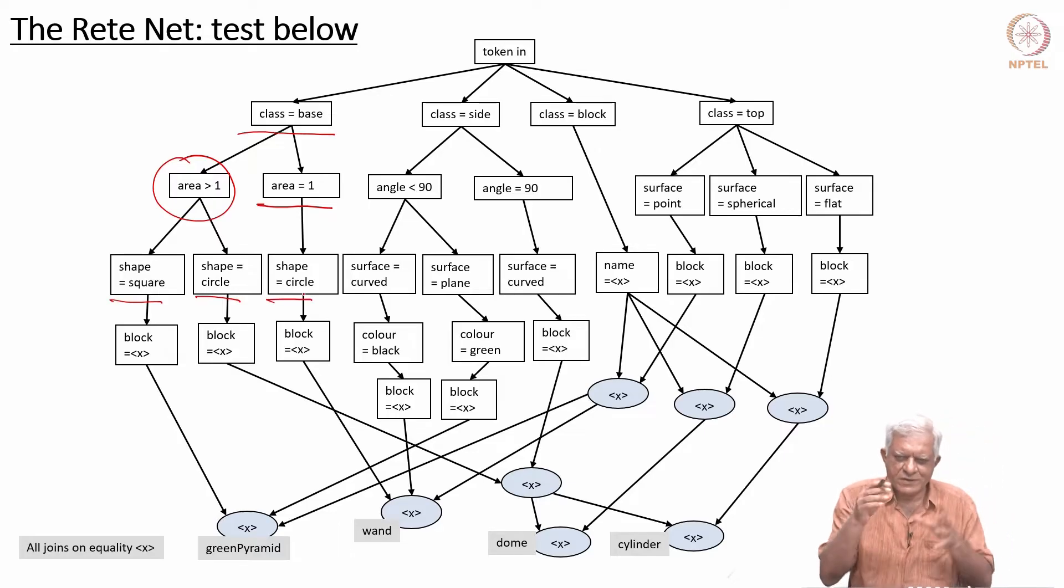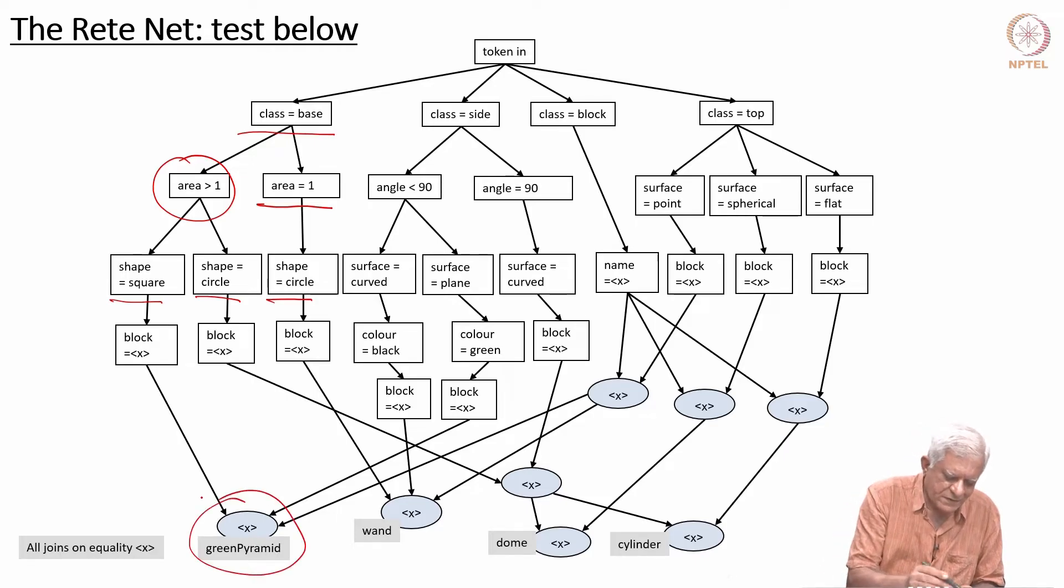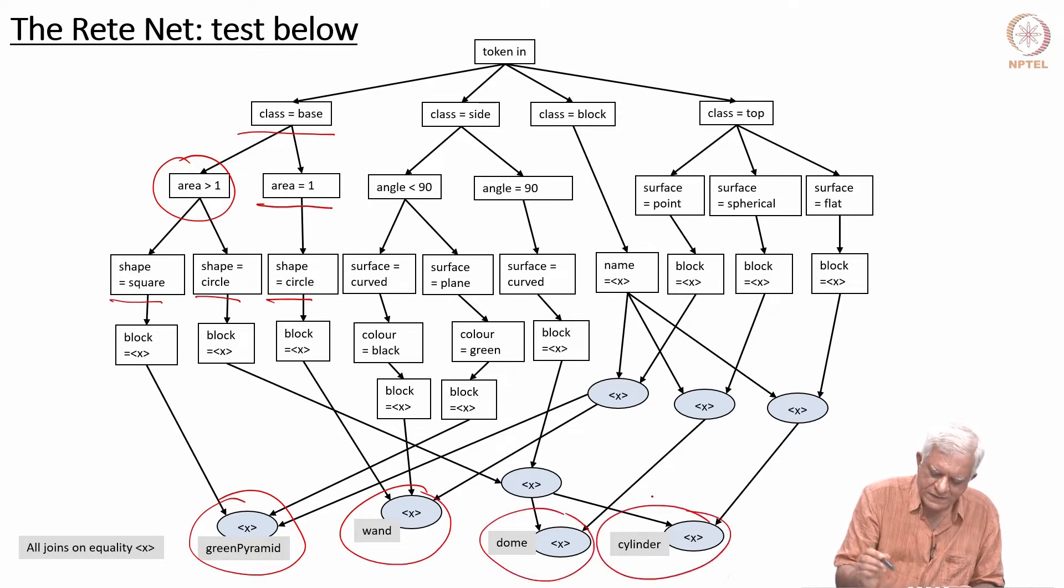Depending on what the working memory element is, it would traverse down a particular path, and we have the four rules we talked about: the green pyramid rule, the wand rule, the dome rule, and the cylinder rule. I would urge you to look at this more carefully offline and see that the four rules we wrote are all captured in this network.